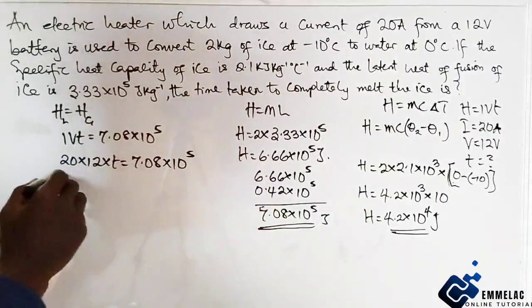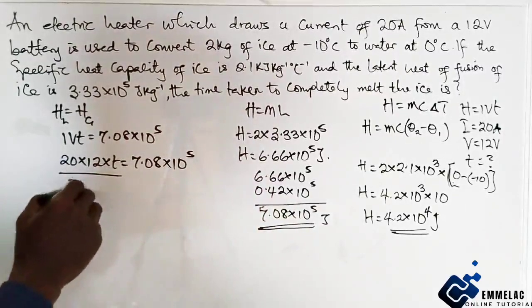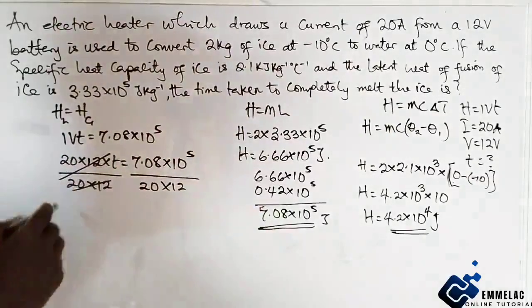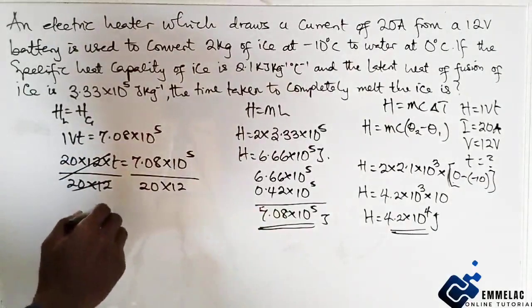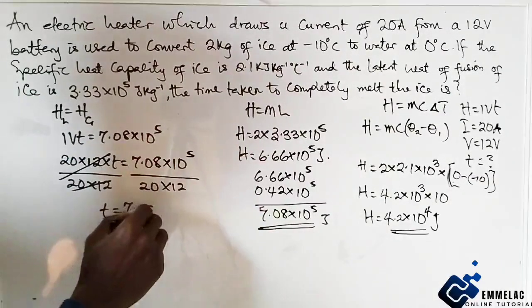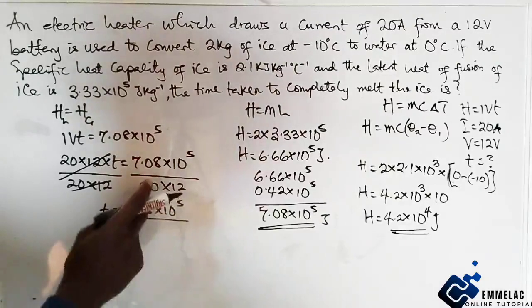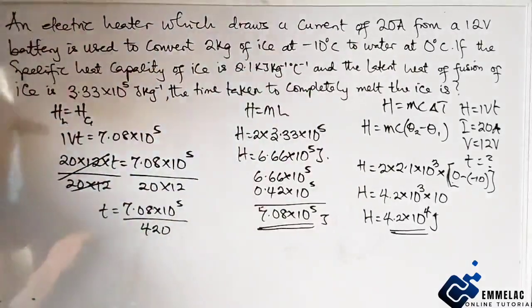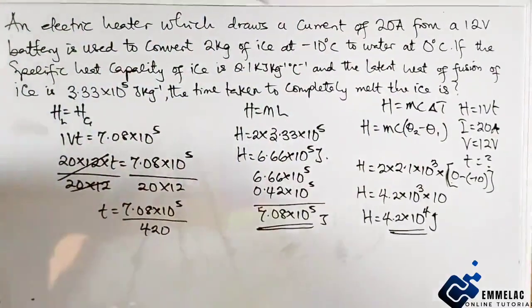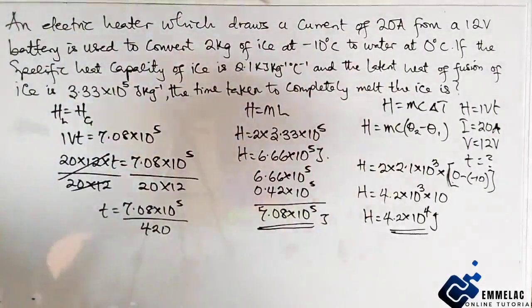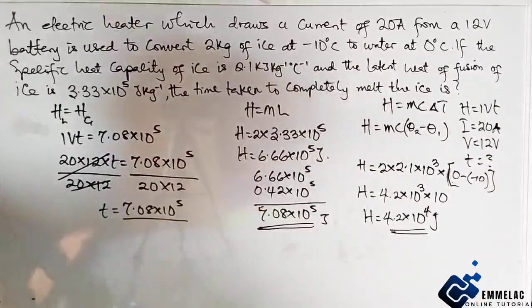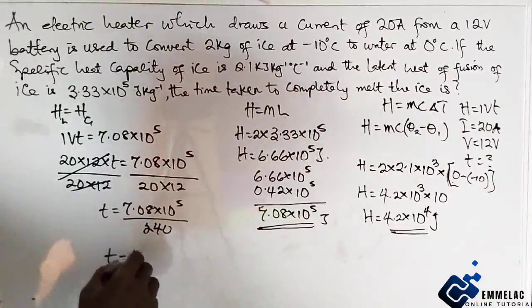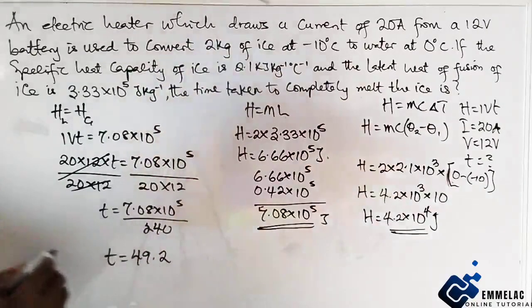We can make T the subject of formula by dividing both sides by the product of 20 and 12. So we have T equals 7.08 times 10 raised to power 5 over 20 times 12, which is 240. Our time after division is 49.2 minutes.